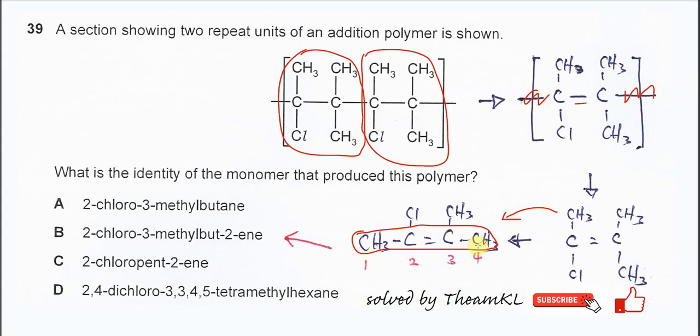First, second - so therefore we know it must end up with but-2-ene. And in this but-2-ene, there are two substituents or two branches.